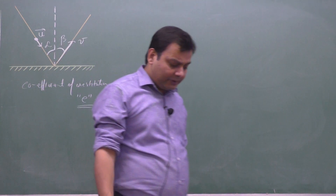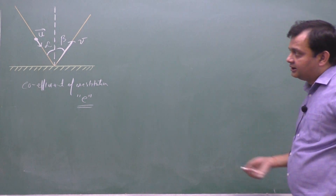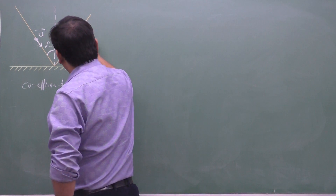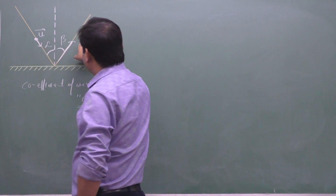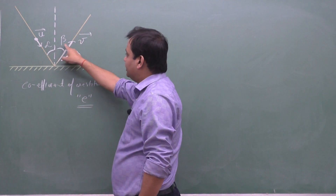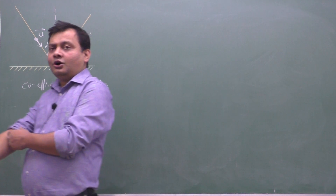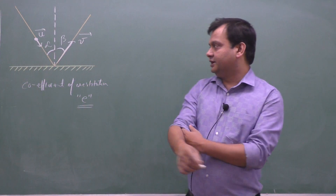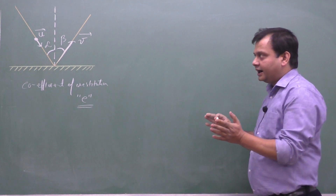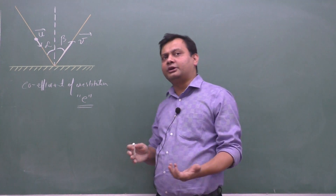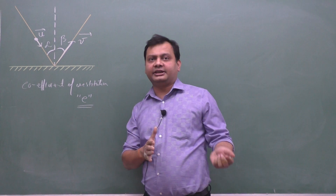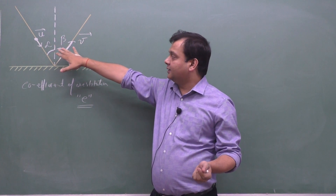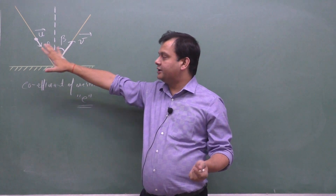We know the basics of collisions: if it is a perfectly elastic collision, the value of e is 1. In that case, the expression tells us that the magnitude of v equals u, and the value of beta equals alpha.